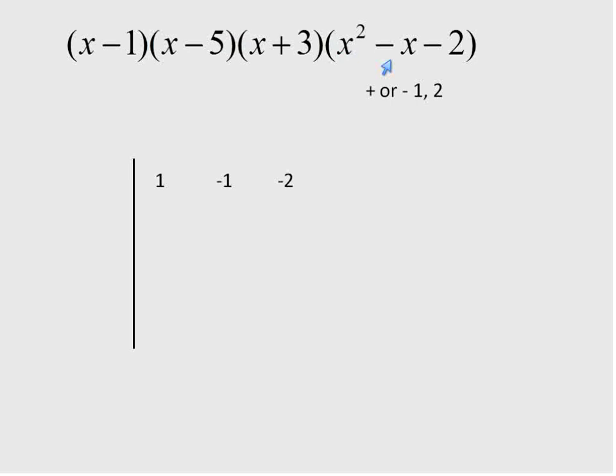So again, I take the coefficients 1, negative 1, and negative 2 and list them here. I need to find the factors of the final term, which is 1 and 2. And I'm going to pick the factor of positive 2 because I know it's going to work. But again, if you pick one that's not going to work, you'll just at the end not get 0 and know that you can remove it.